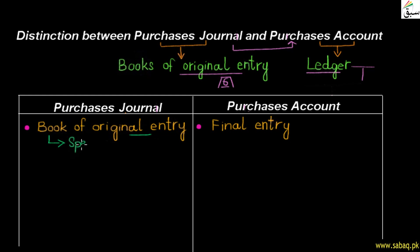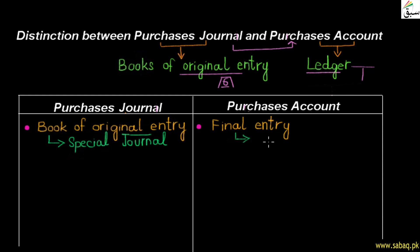The purchases journal is a book of original entry — it records the first entry of a transaction. The purchases account, on the other hand, is a ledger account — it is the final entry, recorded after the journal.